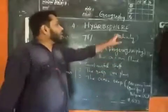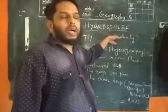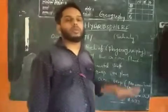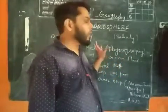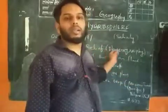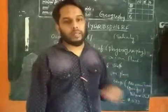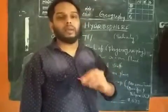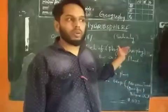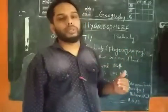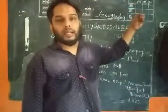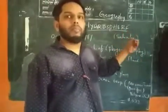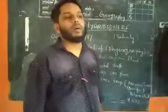The majority of ocean water is saline. The main reason is that rivers, streams, and lakes carry different types of minerals to the ocean. While flowing from the mountains to the sea, water carries different types of soil, sand, minerals, and salt. These minerals make the ocean water salty.